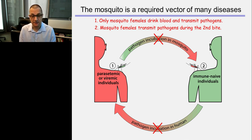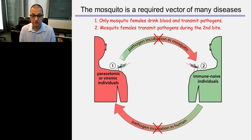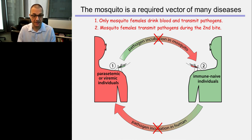We can intervene and break this cycle by reducing the number of mosquitoes in the population or by reducing the lifespan of the mosquito. If a mosquito doesn't live long enough to bite a second time, it will not be able to transmit disease. We can also essentially make mosquitoes refractory so they don't get the disease themselves and cannot transmit it. On the human side, we can reduce contact between people and mosquitoes, vaccinate people, or give people therapeutic drugs so they stay healthy and don't develop a full-blown disease.